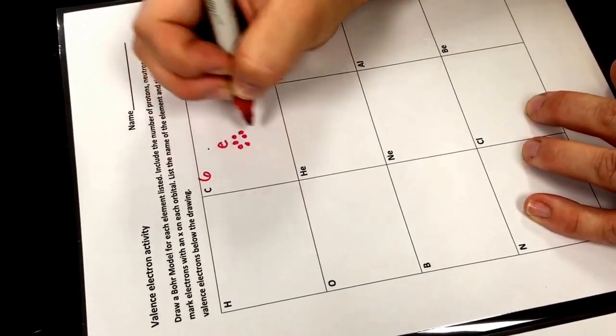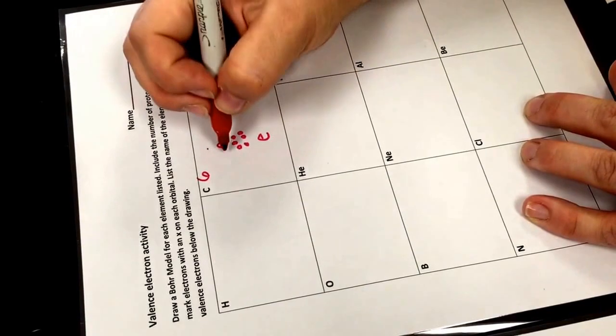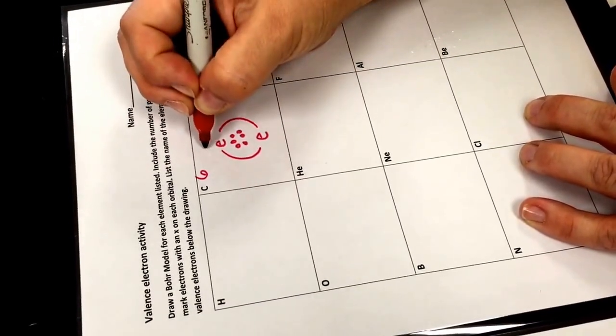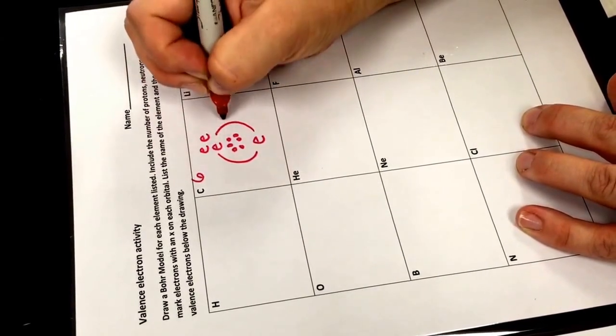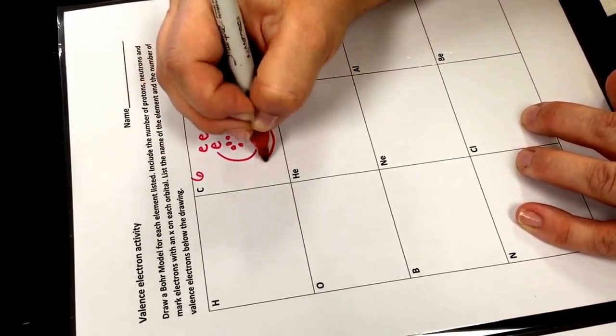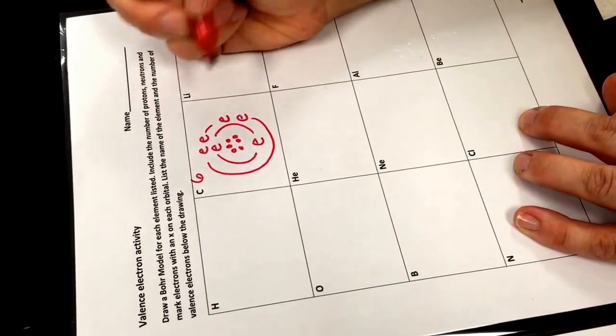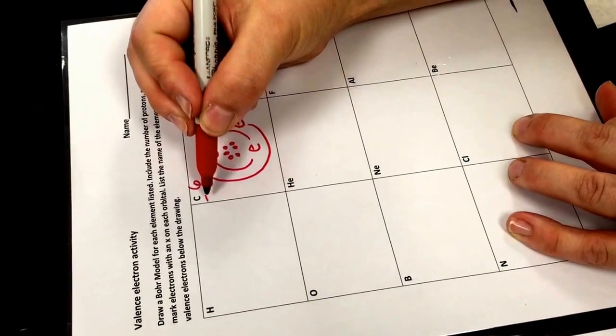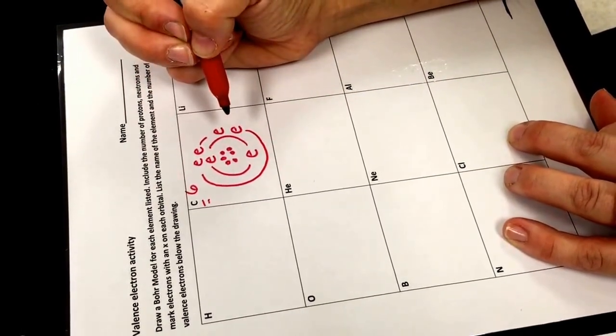I'm going to draw 1, 2 electrons in that K shell, and then 3, 4, 5, 6, the other 4 in the L shell. You can use your chart and your knowledge of the carbon atom to draw dots that represent the number of protons.